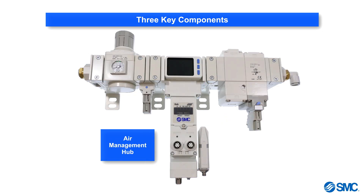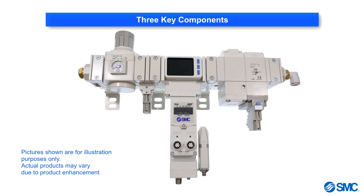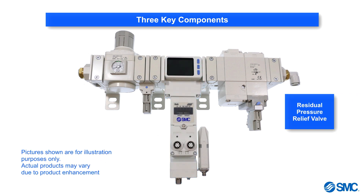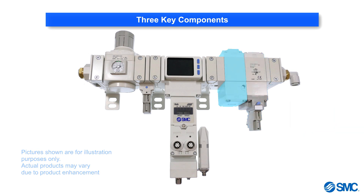Next is the air management hub. This monitors the flow, pressure and temperature, as well as controlling the other system components. The final component is the residual pressure relief valve, which is used to isolate and vent the air supply downstream of the system.